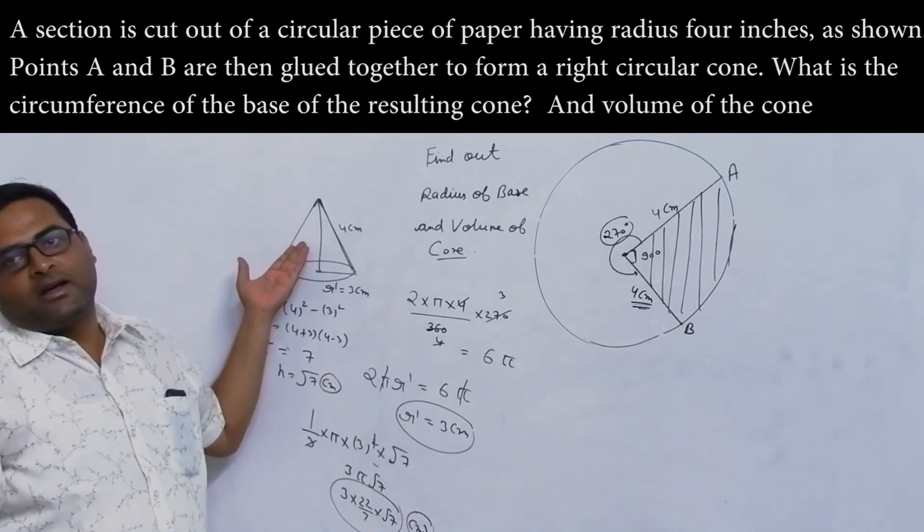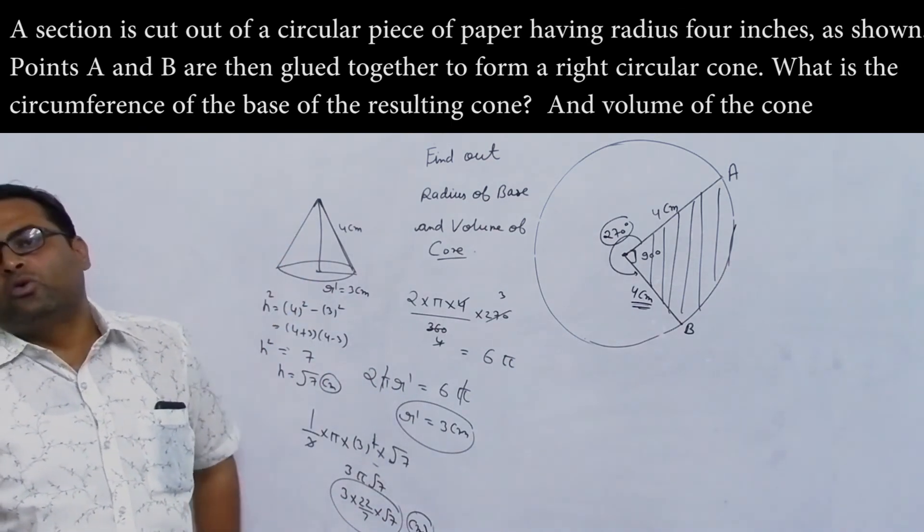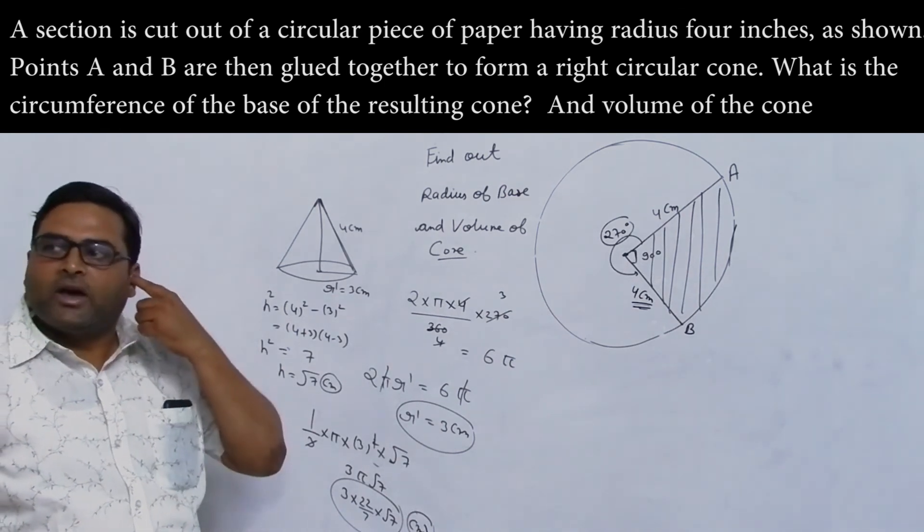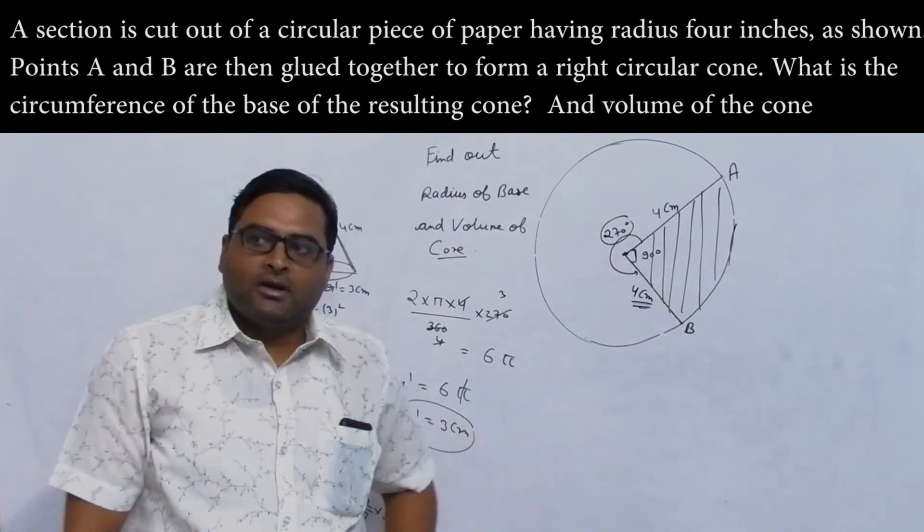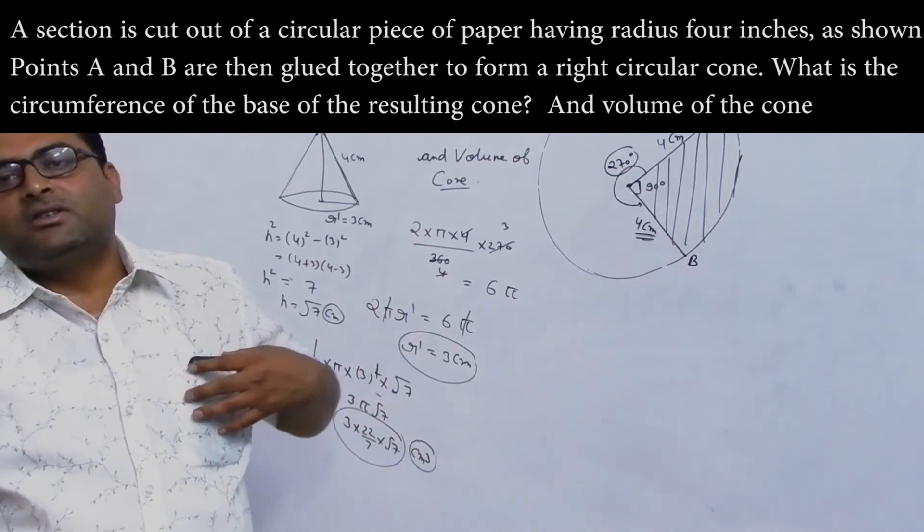From that you found the radius. Then you found the height. Then using the formula 1/3 π r squared h, you got the answer.